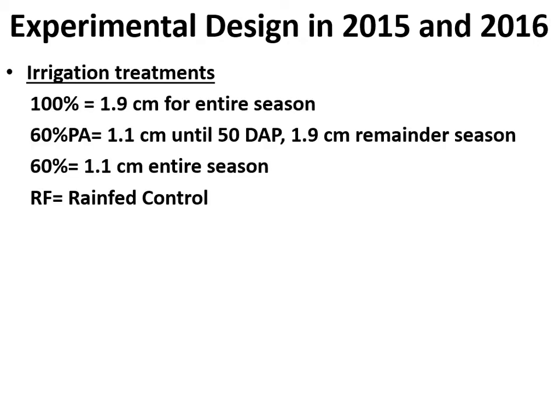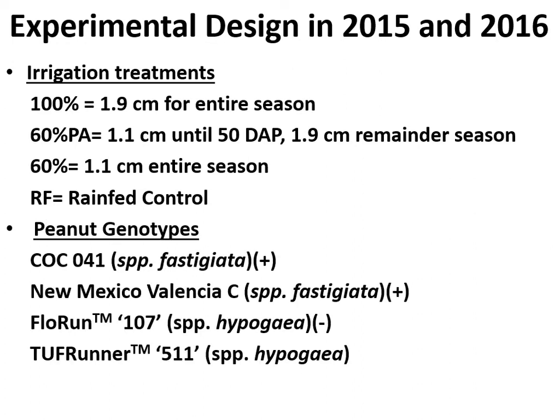A two-year study used four irrigation treatments: a well-watered treatment at 1.9 cm per application; a 60% primed acclimation treatment with reduced water during the first 50 days after planting followed by 1.9 cm for the remainder of the season; a deficit irrigation of 1.1 cm for the entire season; and a rain-fed control. These treatments were applied to four genotypes — two of Fastigiata descent (COC-041 and New Mexico Valencia C), which were positive water responders, and two commercial Hypogea cultivars, one a negative water responder and Toughrunner 511.